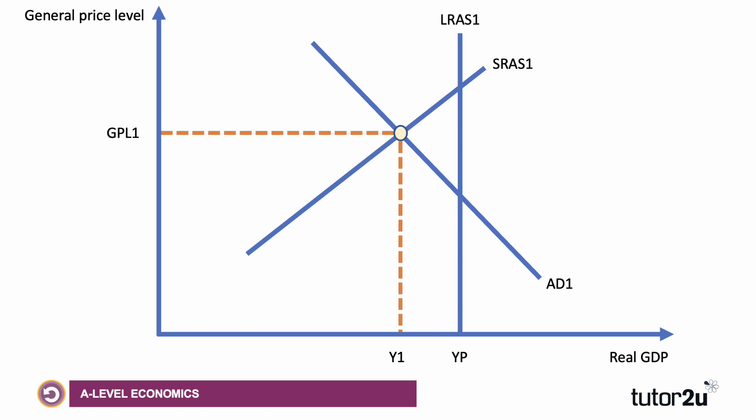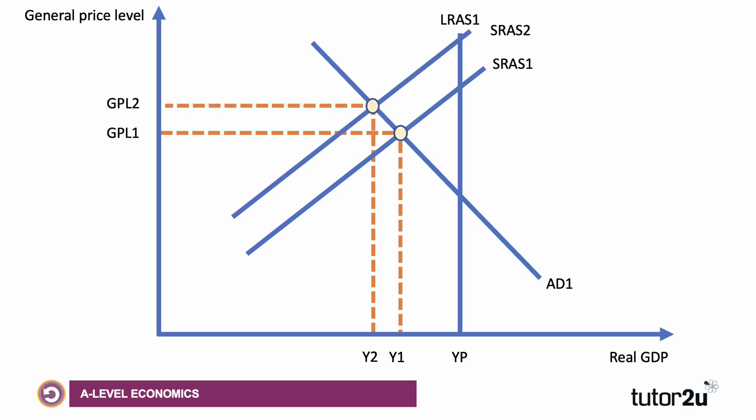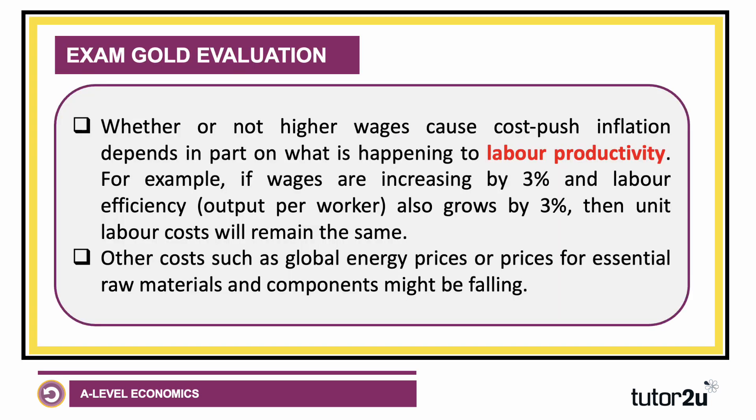Obviously, we could support this analysis with a diagram. So higher wages, if they lead to higher unit labour costs, would cause an inward shift of aggregate supply, driving the price level up and causing a contraction in real output.